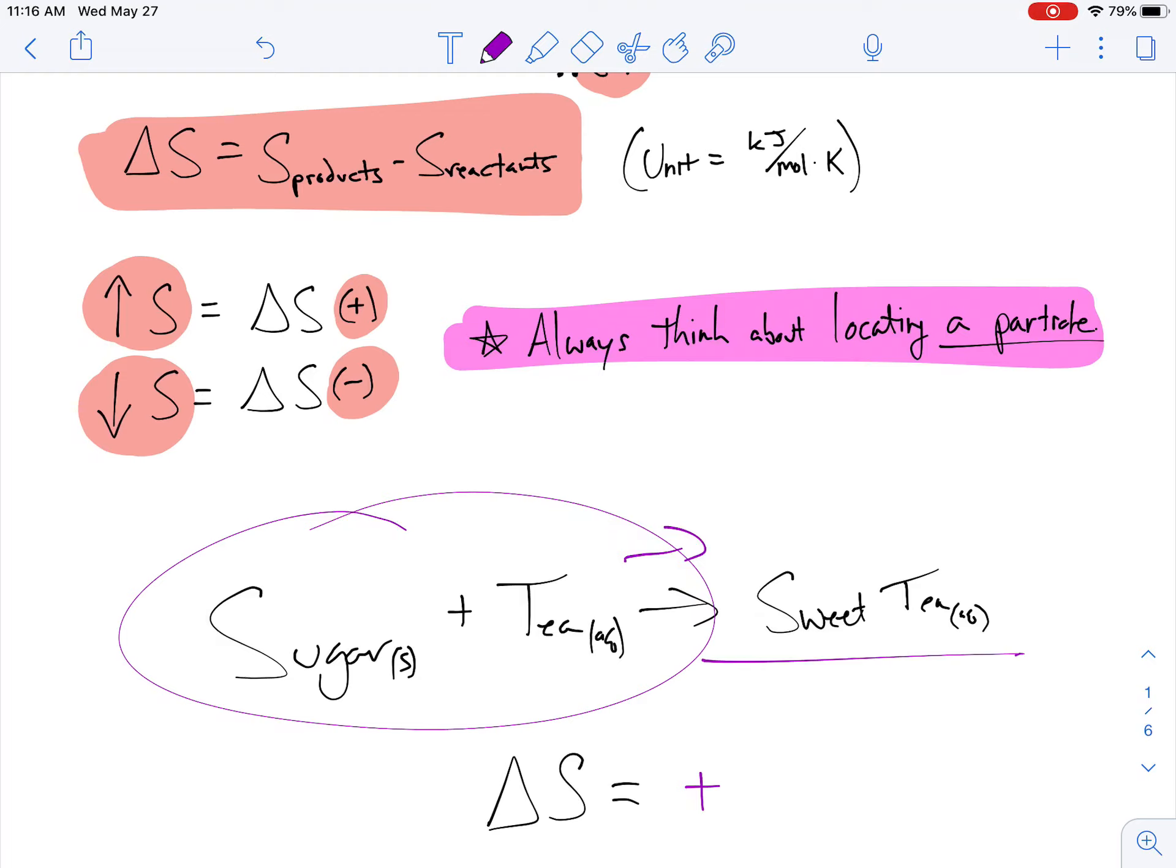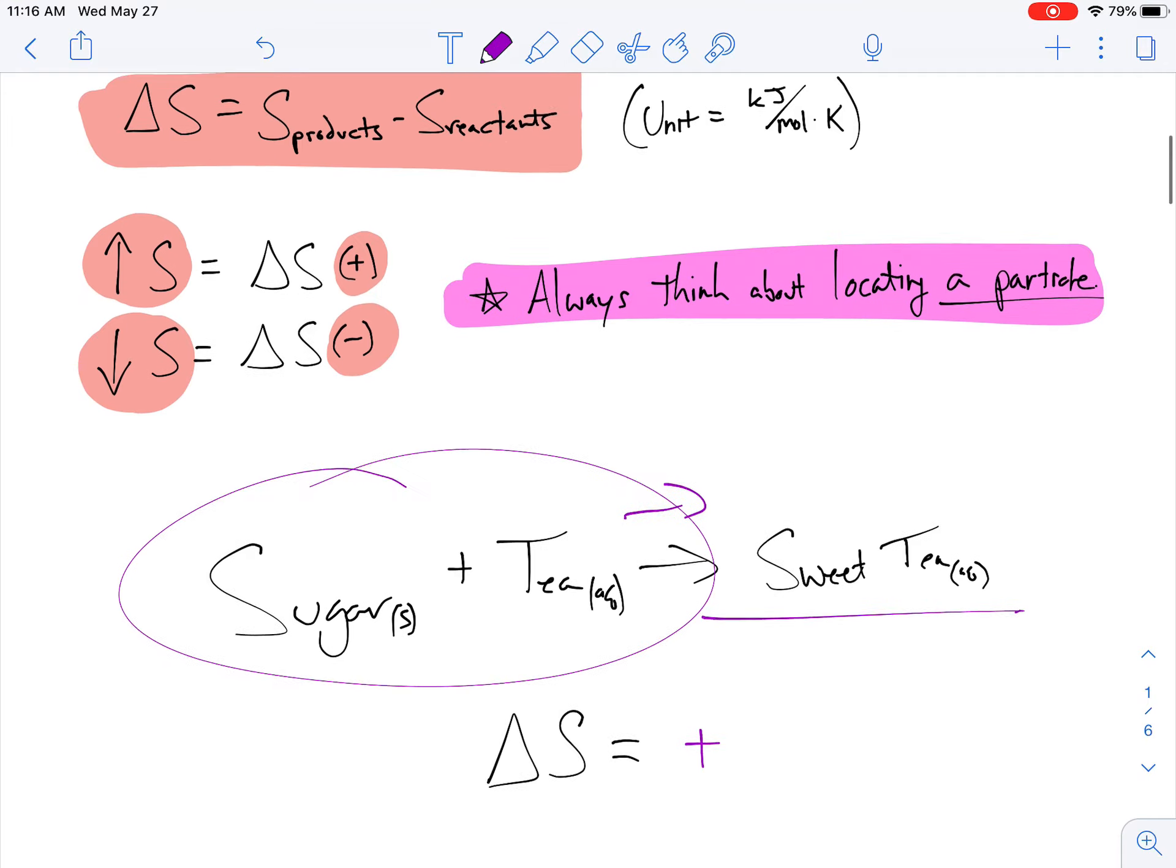Other things that would be a delta S positive would be anytime you mix anything. If I have more moles of gas, or if I have solid to a liquid, or if I have more liquids present, these would all be a delta S that's positive.